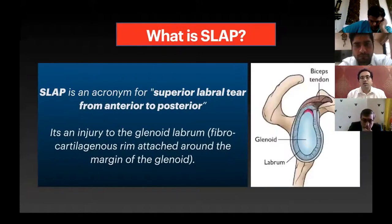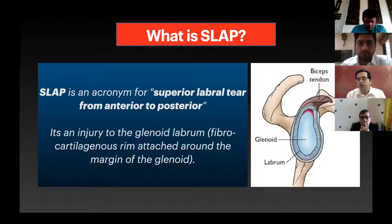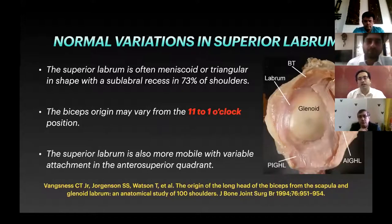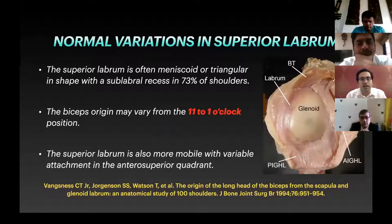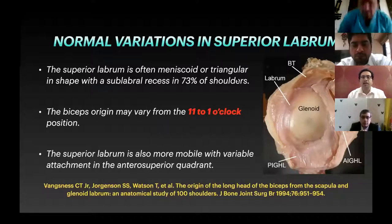What is a SLAP lesion? SLAP is an acronym for superior labral tear from anterior to posterior. The glenoid labrum superiorly is a fibrocartilaginous rim attached to the margin of the glenoid, and any injury to this margin, the labrum, as well as the biceps anchor, is termed a SLAP tear. The superior labrum is usually meniscal or triangular and has a sub-labral recess which should not be mistaken for a tear. The biceps origin is variable — it can vary from 12 o'clock to 11 or 1 o'clock position — and the superior labrum is mobile compared to the rest of the labrum.